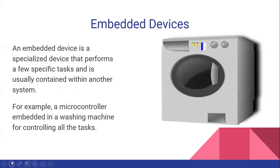Finally, we look at the last type of computer: embedded devices. An embedded device is a specialized device that performs a few specific tasks and is usually contained within another system. For example, a microcontroller embedded in a washing machine for controlling all tasks. Another example is a heart monitor embedded in a smart watch.